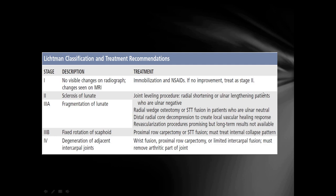The first is the Lichtman classification, which is based on radiological studies. It has four stages: Stage 1 — no visible changes on radiograph, changes might be seen on MRI; Stage 2 — sclerosis of the lunate evident on X-ray; Stage 3A — fragmentation of lunate without rotation of the scaphoid; Stage 3B — fragmentation or collapse of lunate with fixed rotation of the scaphoid; Stage 4 — degeneration of adjacent intercarpal joints.